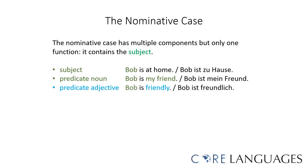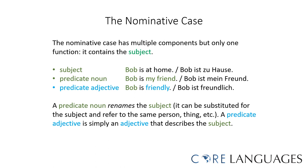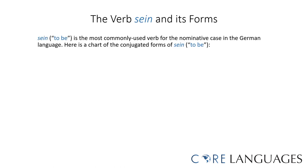The nominative case can also include the predicate adjective. For example, "Bob is friendly" — Bob ist freundlich. The adjective here describes Bob; Bob is still in the nominative case. In summary, a predicate noun renames the subject — it can be substituted for the subject and refers to the same person or thing. A predicate adjective is simply an adjective that describes the subject. The verb sein, or "to be," is one of the most commonly used verbs for the nominative case in the German language. Let's review the conjugation of sein.